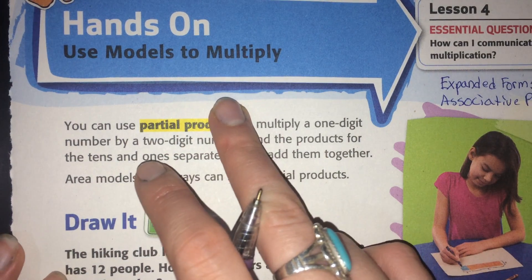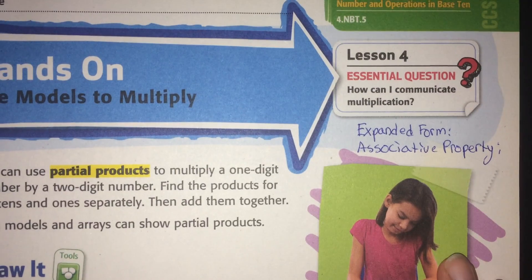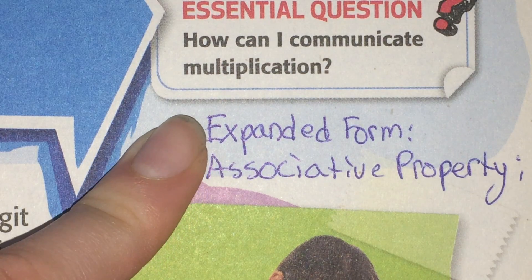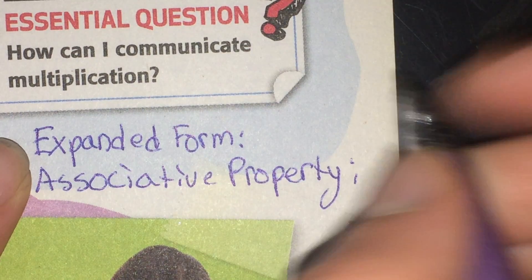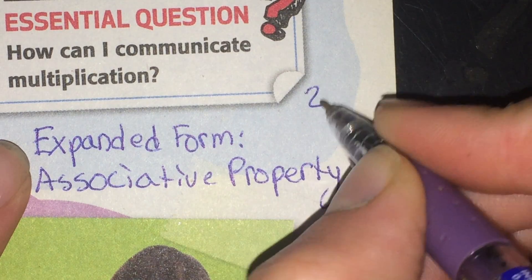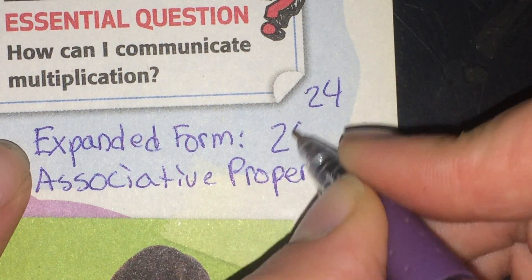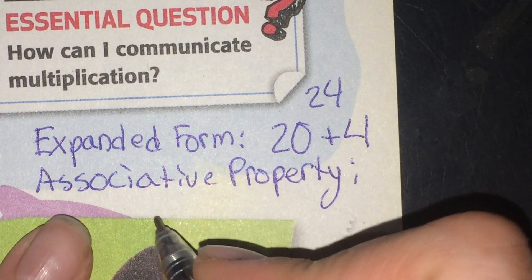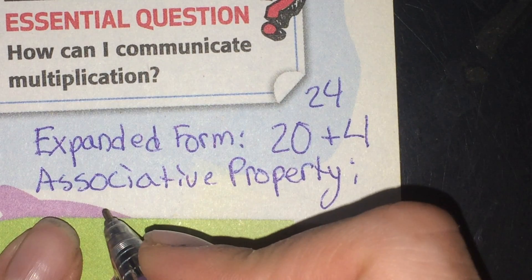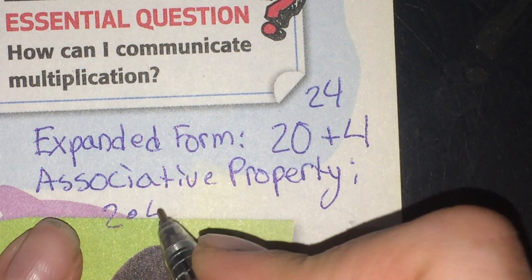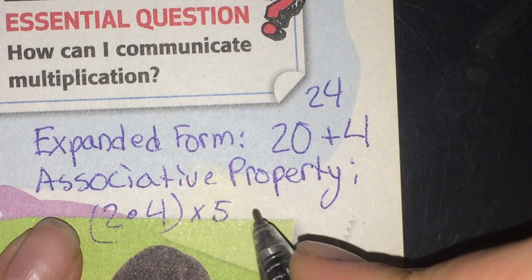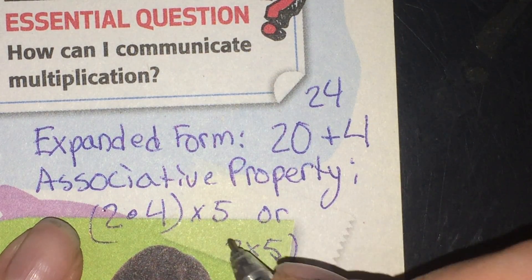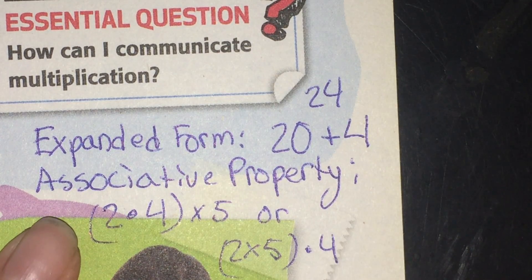So we're going to be drawing models, and today's really going to put your knowledge of expanded form—remember, expanded form from Chapter 1, where you write a number instead of like 24, you'd write it like 20 plus 4. And the associative property. Remember, the associative property says it doesn't matter which one you multiply first. So you can multiply 2 times 4 and then times 5, or 2 times 5 and then times 4, and it's still going to be the same.